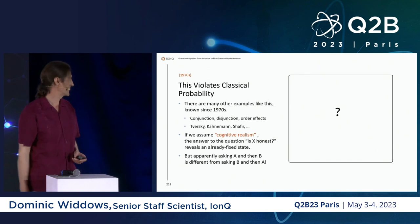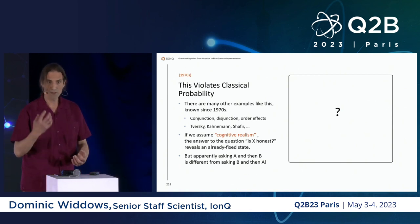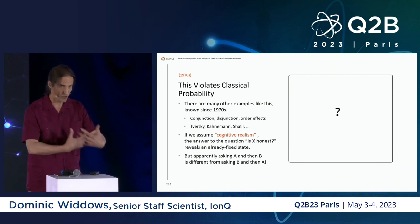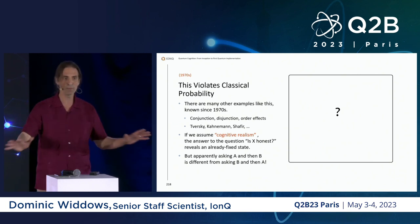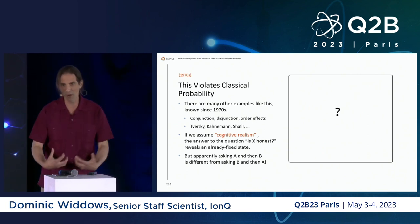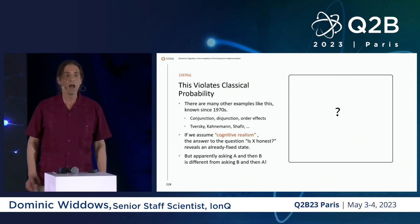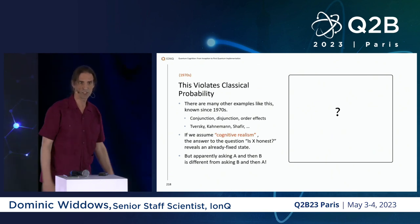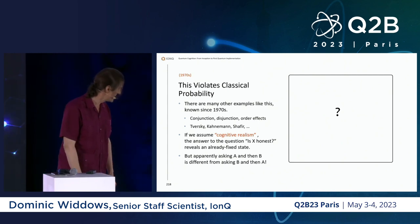It violates classical probability. There are other known examples like this from the 1970s — problems with conjunction, disjunction, and order effects. By a cognitive problem I mean something that scientists find confusing, not that people who reason this way are problematic — this is a problem with our models. The work of Tversky, Kahneman, and Schaefer, including Dan Kahneman's book 'Thinking Fast and Slow,' really started in the 1970s and continues today.